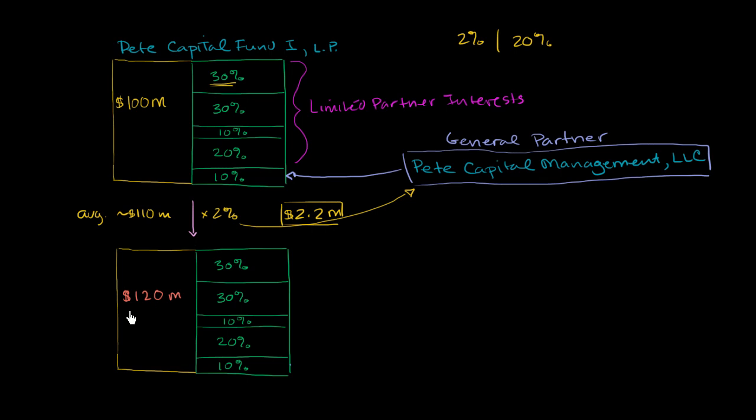So we need to subtract that from the total amount in the fund, because that's going to the management company. So instead of $120 million over here, we're going to have $117.8 million. And then we'll have to calculate how much he gets in a performance fee. So in this situation, net of his management fee, we have a $17.8 million gain. We have $17.8 million in profits.